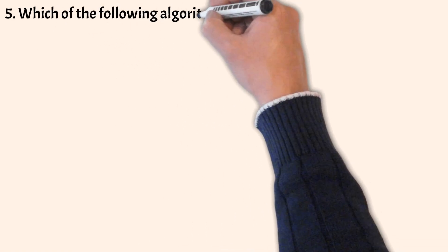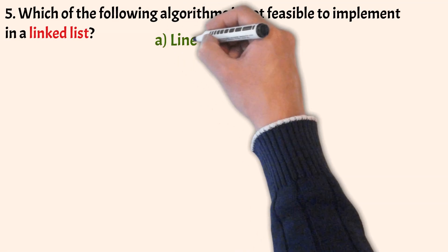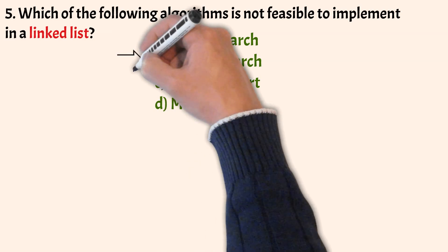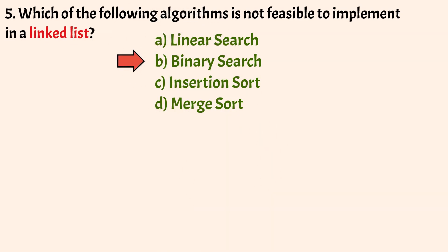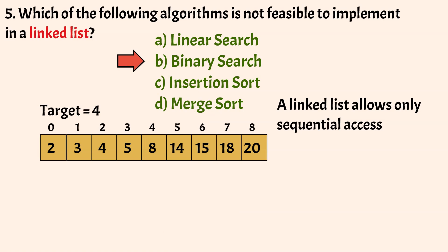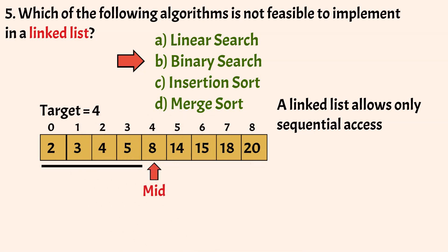The next question is: which of the following algorithm is not feasible to implement on a linked list? The options are: linear search, binary search, insertion sort, merge sort. The correct answer is Option B, that is binary search. Binary search is not feasible on a linked list because a linked list allows only sequential access. In a binary search, it starts by comparing the target value to the middle element in an array, and to do this in a linked list, it would have to traverse the list from the first node to the middle node sequentially, increasing traversal steps and making it slow and inefficient.